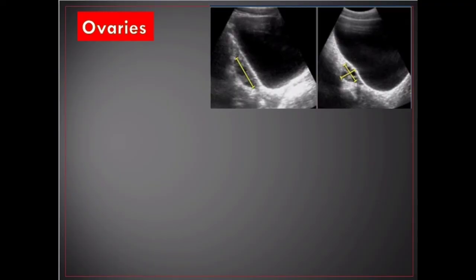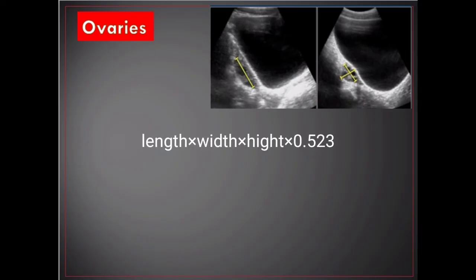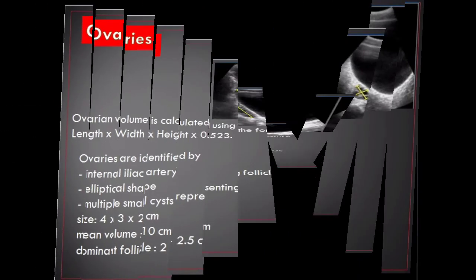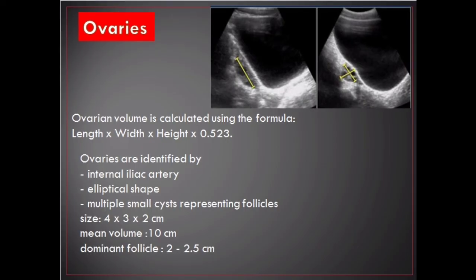Ovaries. Ovarian volume is calculated using the formula: length × width × height × 0.523. Ovaries are identified by the internal iliac artery, have an elliptical shape with multiple small cysts representing follicles. Size is approximately 4 × 3 × 2 centimeters, mean volume about 10 cubic centimeters. The dominant follicle measures 2 to 2.5 centimeters.